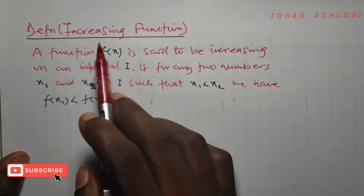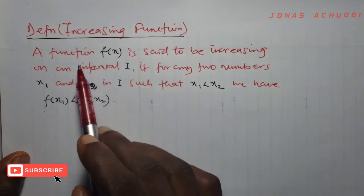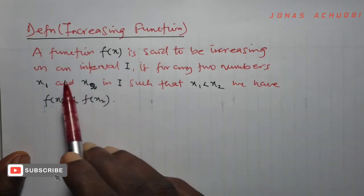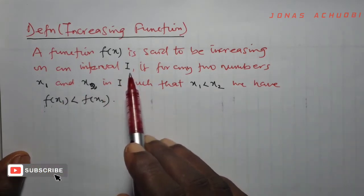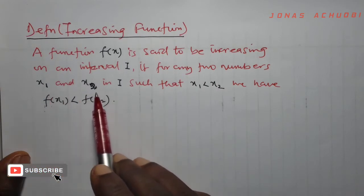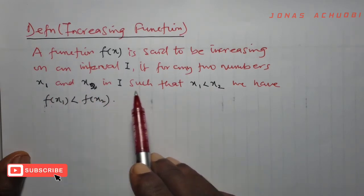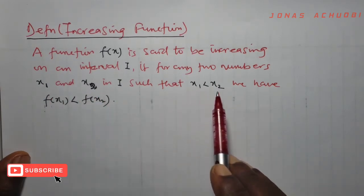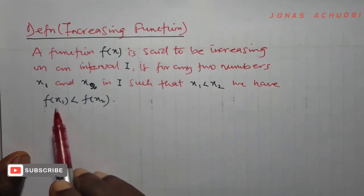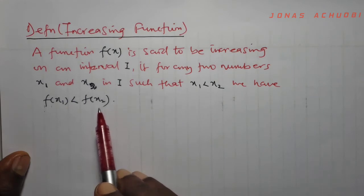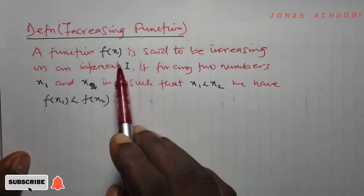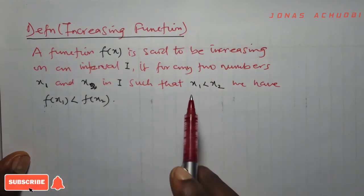Definition of increasing function. A function f is said to be increasing on an interval i if for any two numbers x1 and x2 in the interval i, such that x1 is less than x2, we have that f of x1 is less than f of x2. If this happens, then we call the function f of x an increasing function.